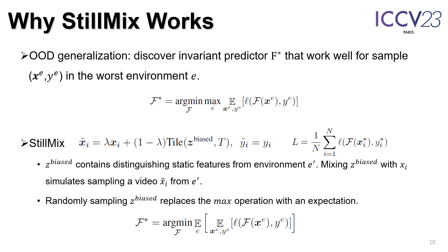We explain why Still Mix works from the perspective of OOD generalization, which attempts to learn invariant predictors that work well in all environments by optimizing the loss on the worst environment. Still Mix mixes a video X_i with a biased frame Z_biased sampled by the reference network, which contains static features biasing predictions toward specific classes and can be regarded as coming from an environment E prime. Mixing Z_biased with X_i simulates sampling from E prime, and by randomly sampling Z_biased, Still Mix optimizes the loss across all environments — replacing the maximization with an expectation — making it a variant of OOD generalization.